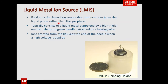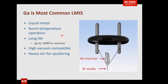The liquid metal ion source is a very interesting source. It's a field emission based ion source that produces ions from the liquid phase rather than the gas phase. It's a liquid metal supported by a tungsten needle. Here's an example of one — you can see it's not much bigger than, actually smaller than, an American dime. Here's your needle and the electrodes. The ions are emitted from the liquid at the end of the needle when you apply a high voltage. Gallium is the most common liquid metal ion source — it has properties that are very suitable for what we want to do.